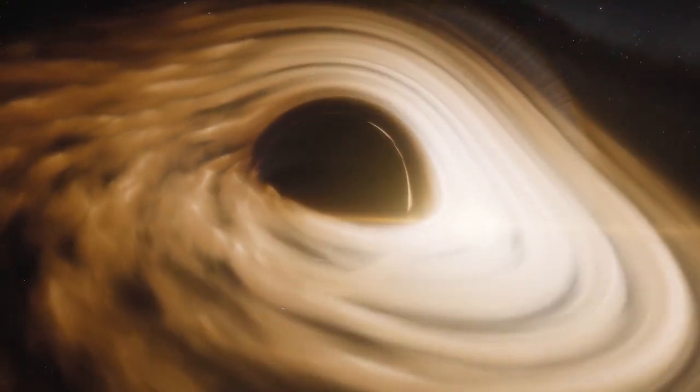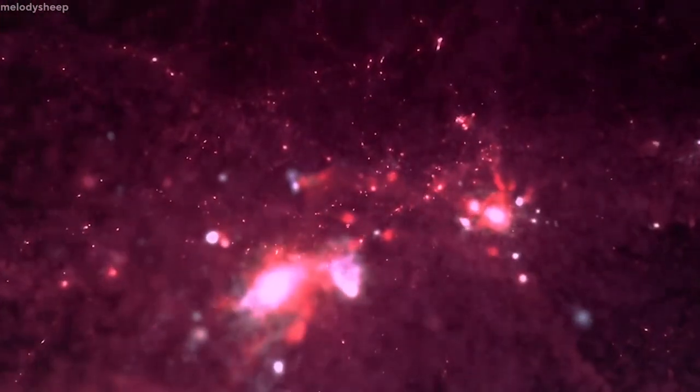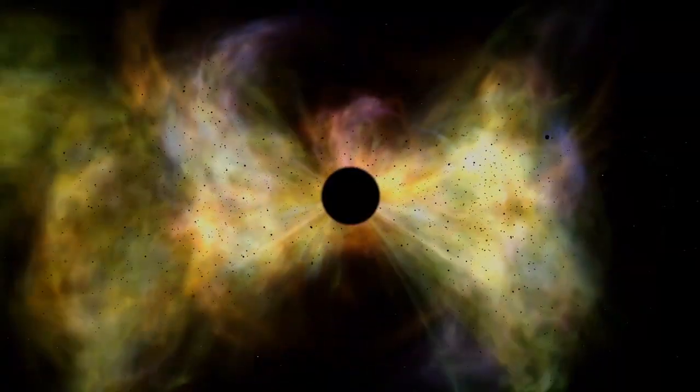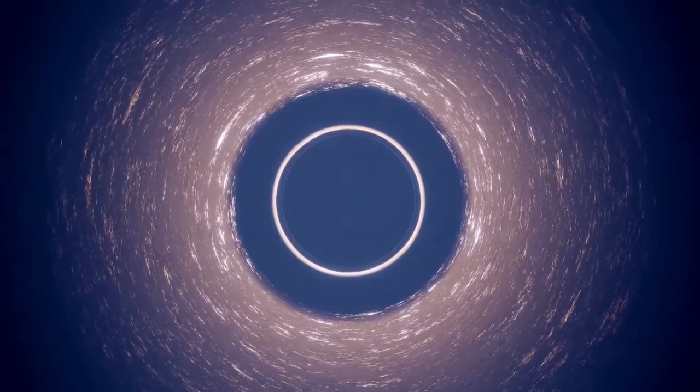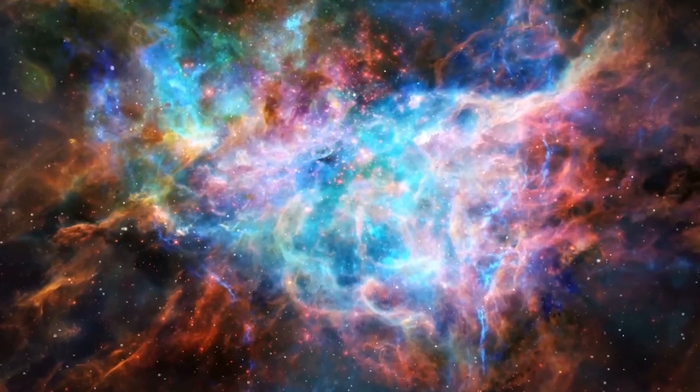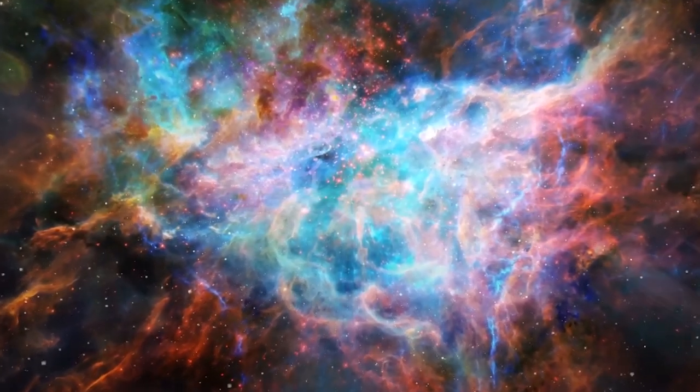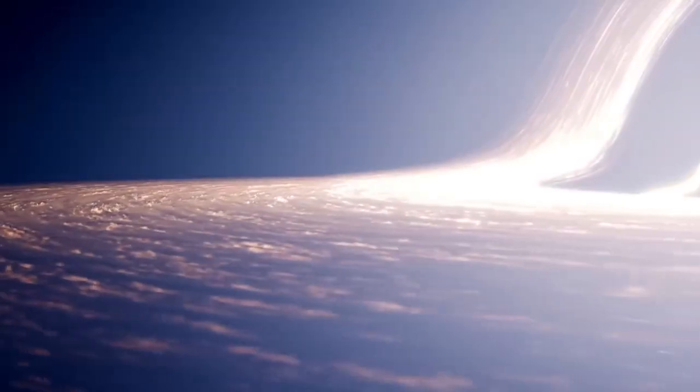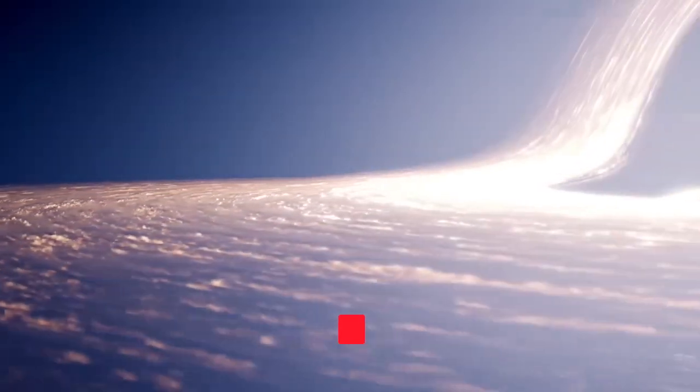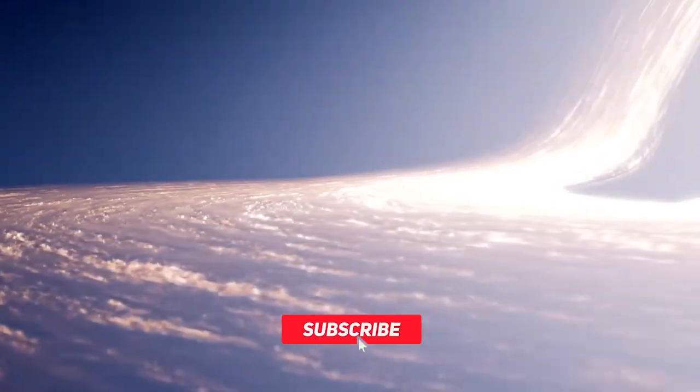However, black holes can also lose mass over time through a process known as Hawking radiation. Hawking radiation is a phenomenon that occurs due to the quantum mechanical effects that take place near the event horizon of a black hole. According to the theory, pairs of particles are constantly being created near the event horizon, with one particle falling into the black hole and the other escaping into space. As a result, the black hole loses mass and energy, and its temperature increases.